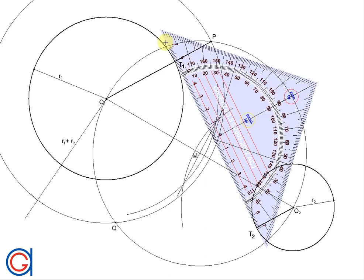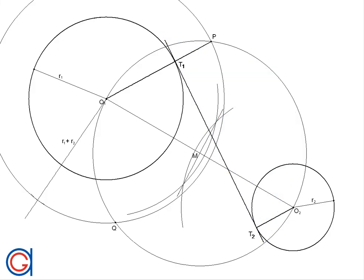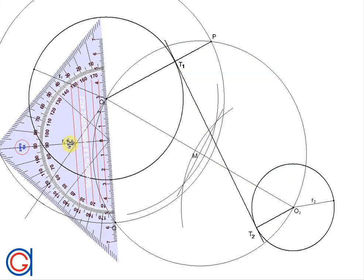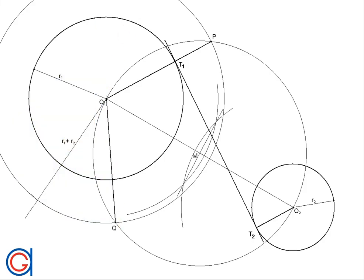So now we are going to draw the internal tangent line passing through points T1 and T2. And now we will repeat this process on the other side. So with a ruler we are going to join O1 to point Q. And where it passes through the internal circle will be our tangent point T3.